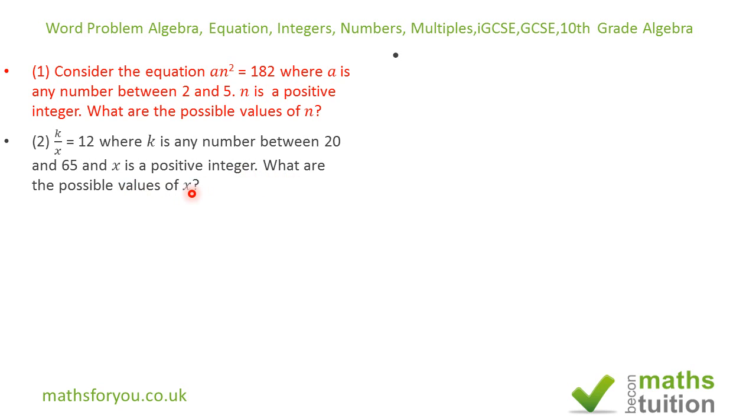For the first one, if we say that 2 < a < 5, now for these three terms, if we multiply each of these by n², we get 2n² < an² < 5n². Now an² as we know is 182, so we end up with 2n² < 182 < 5n².